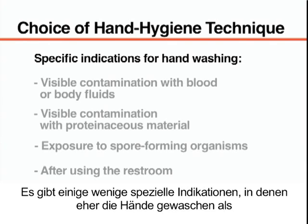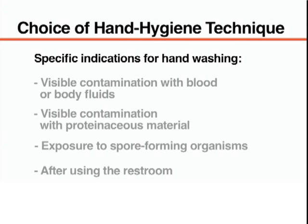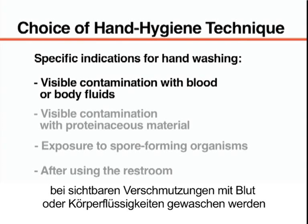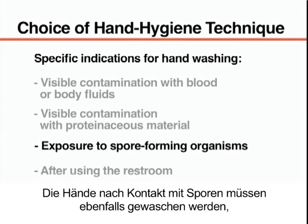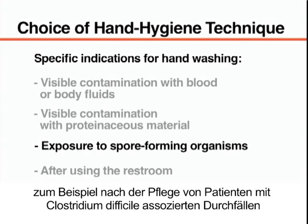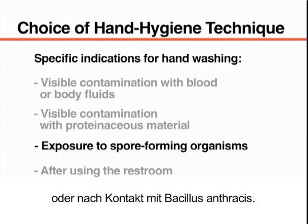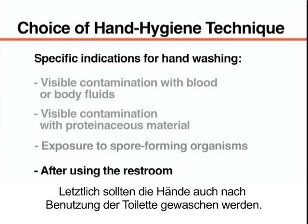There are a few specific indications for which hand washing should be performed instead of hand rubbing. Hand washing must be conducted when the hands are visibly contaminated with blood or body fluids and when the hands are visibly contaminated with proteinaceous material. Hand washing must also be performed after exposure to spore-forming organisms — for example, after caring for patients with diarrhea associated with Clostridium difficile or after exposure to Bacillus anthracis. Finally, hand washing should be performed after using the restroom.